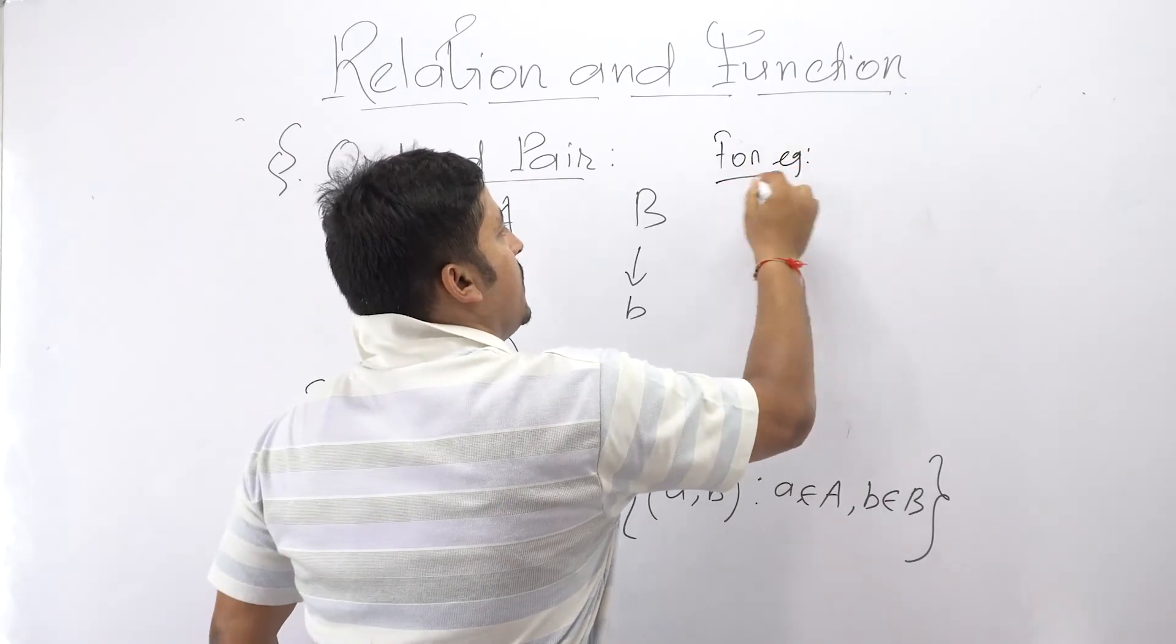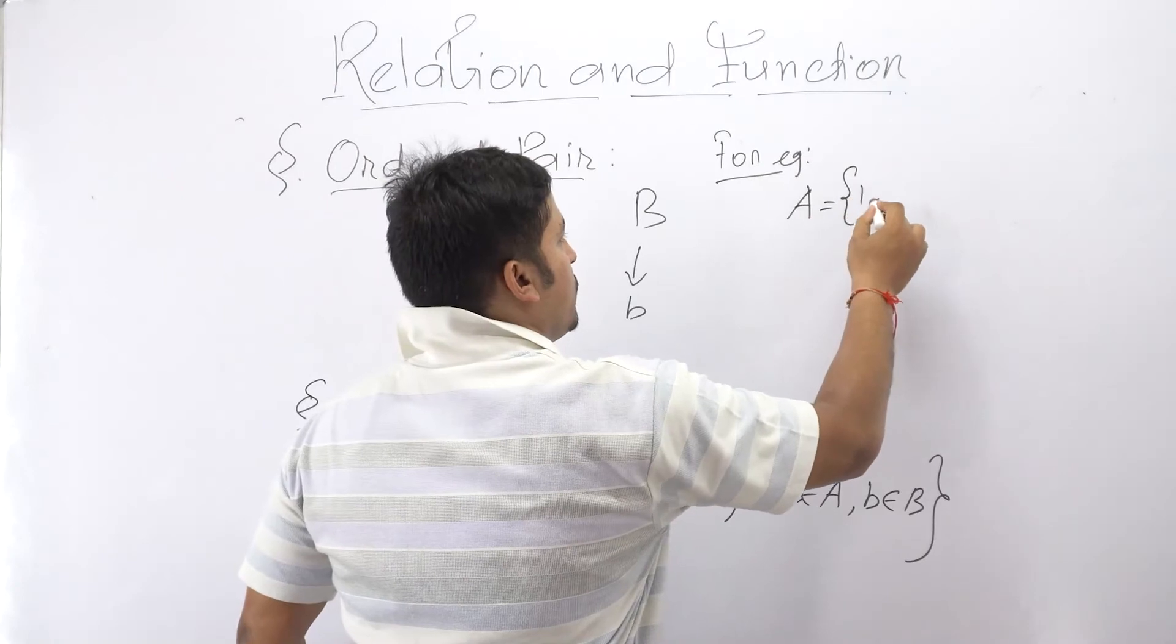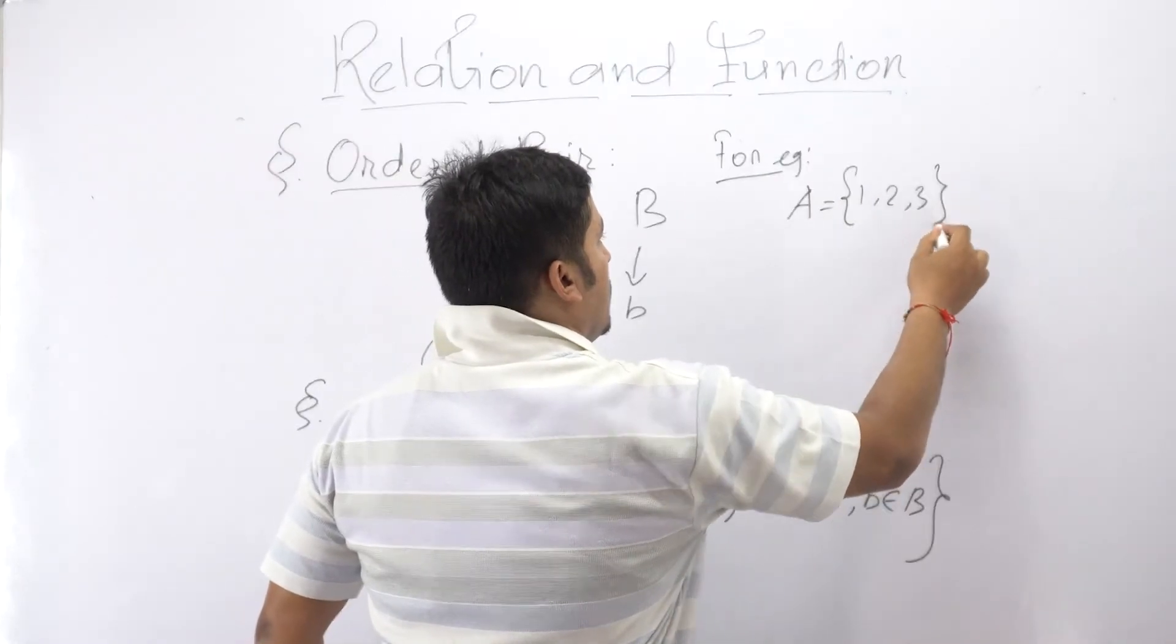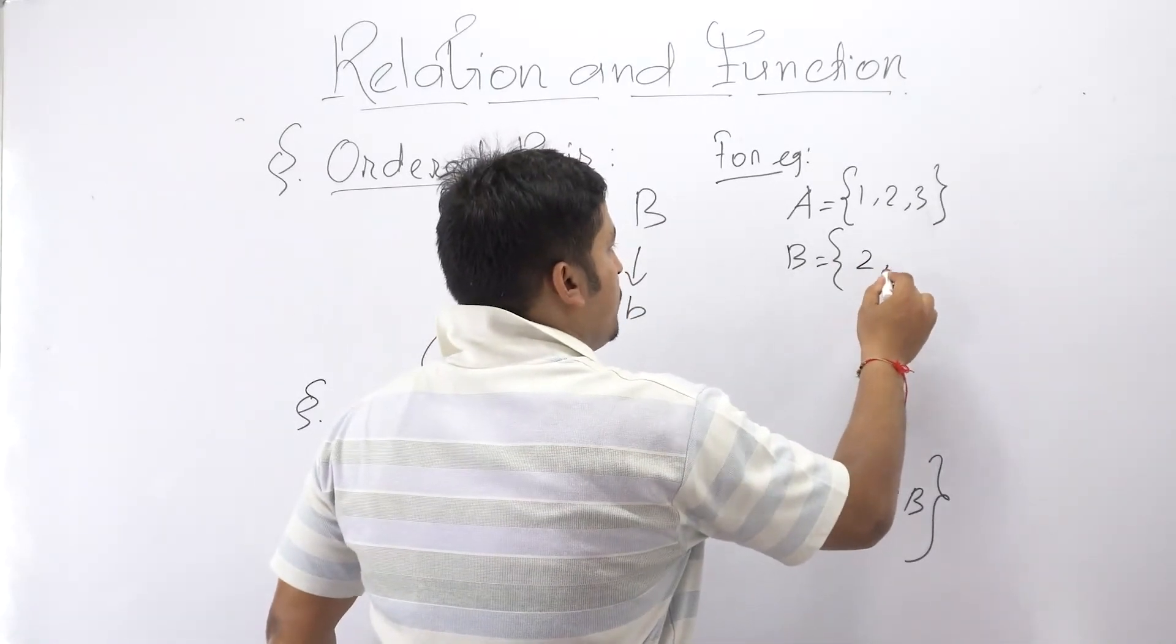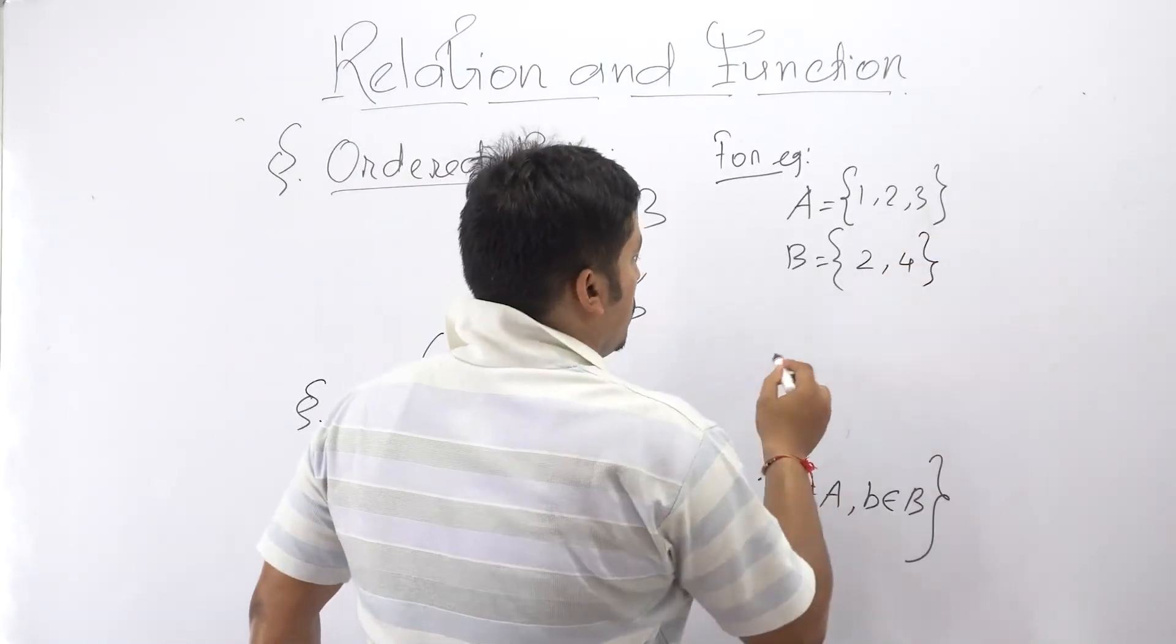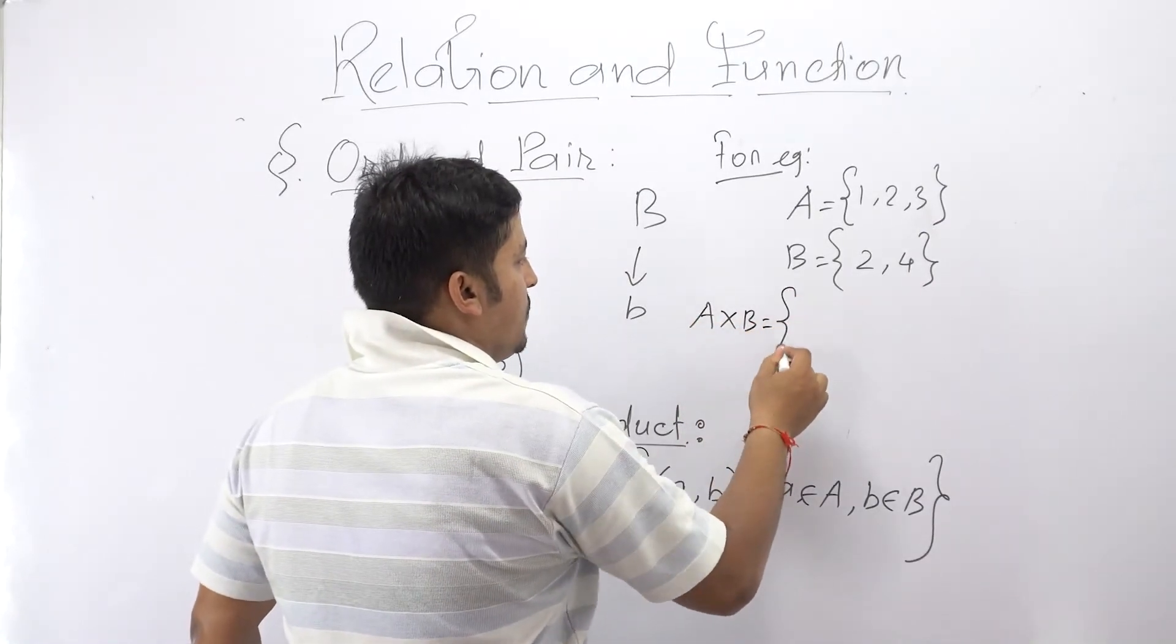Suppose capital A is the set of natural numbers up to three and capital B is the set of even numbers up to four. So in this case what is the Cartesian product will be? The Cartesian product will be what?